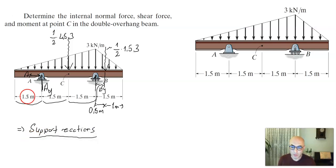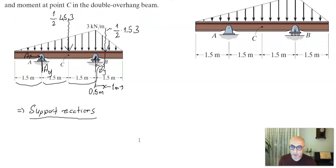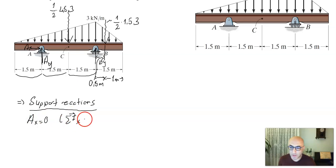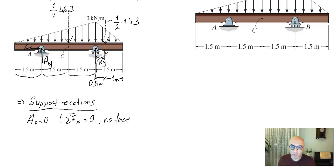By inspection, support reaction Ax equals zero because there is no external force acting along the x-direction.